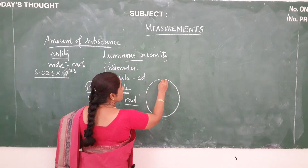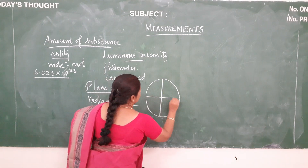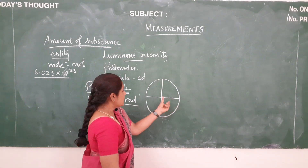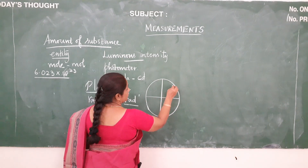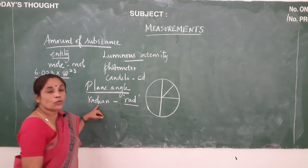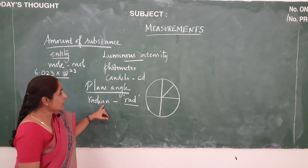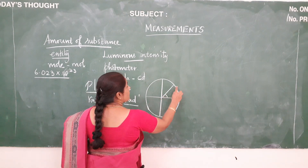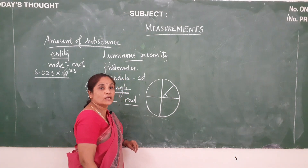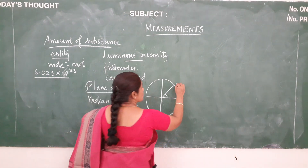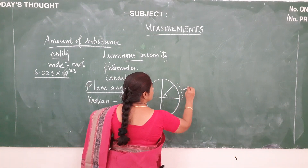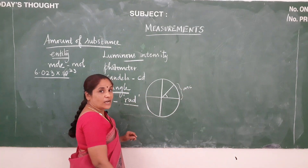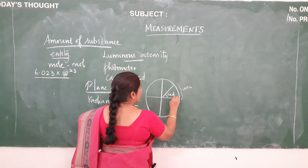Let us draw a circle. This will be the diameter of the circle and this portion is called the radius. Radian is the angle subtended at the centre of the circle by an arc whose length is equal to the length of the radius. This length of the arc must be equal to the length of the radius of the circle. That is your radian.